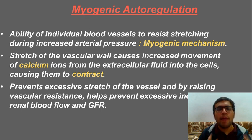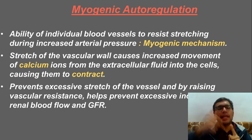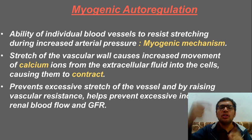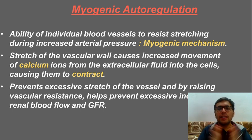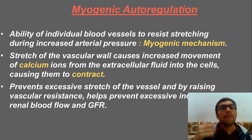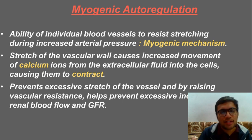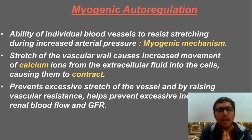Myogenic autoregulation is all related to calcium and muscle contraction. This is your blood vessel — whenever blood flow increases, there will be stretching of the blood vessel. We need to bring some contraction because if it keeps stretching, GFR will increase very high. Whenever the vascular wall stretches, it causes increased movement of calcium ions, and calcium is responsible for contraction.